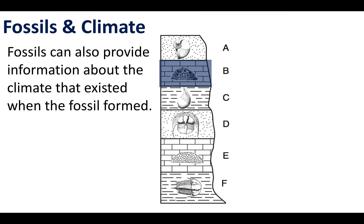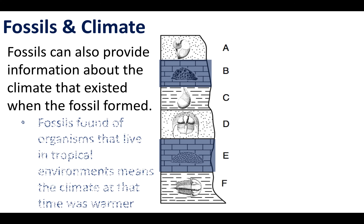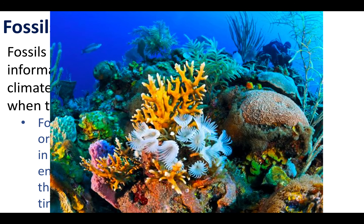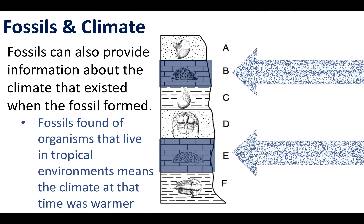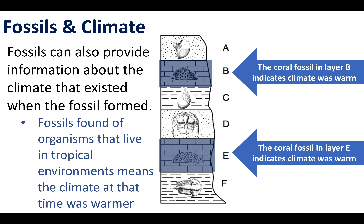In our example, rock layer B and rock layer E contain fossils of corals. Fossils from organisms that thrive in tropical environments can indicate that when those rocks formed the climate was warmer on earth. A coral reef is a very tropical and warm environment — this is what corals need to exist. So finding coral fossils in rock layers B and E indicates that during those specific layers the climate was warmer at that time in the past.